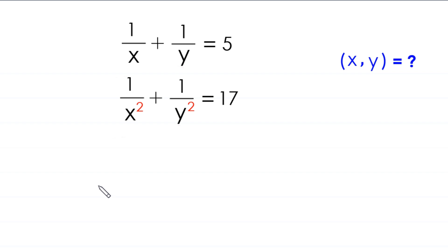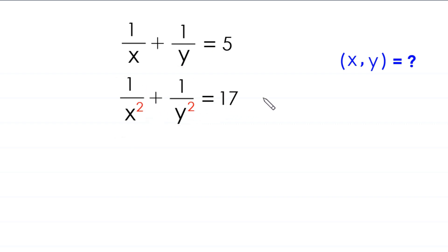Hello everyone, welcome. We will solve a very nice system: 1 over x plus 1 over y is equal to 5, and 1 over x squared plus 1 over y squared is equal to 17. Our job is to find all possible values of x and y. Let's start.